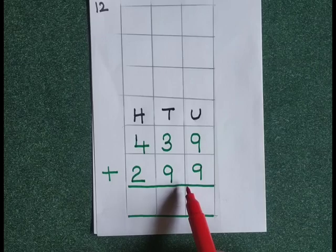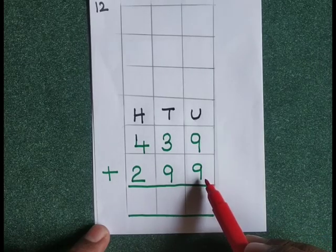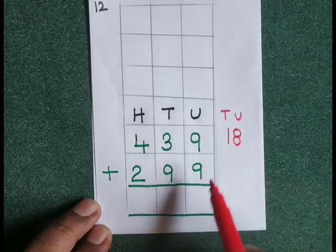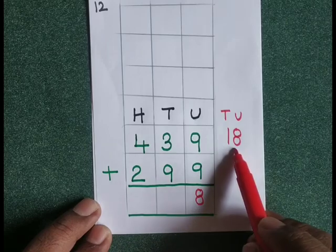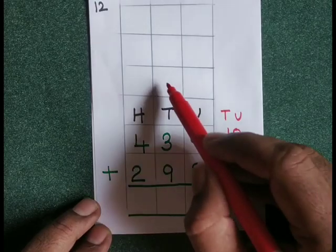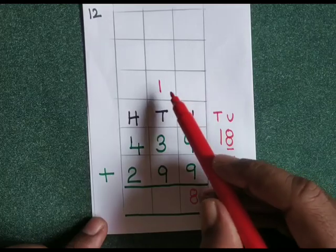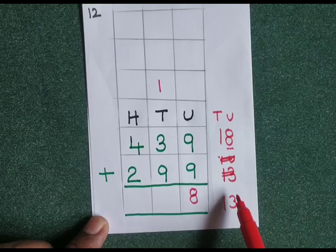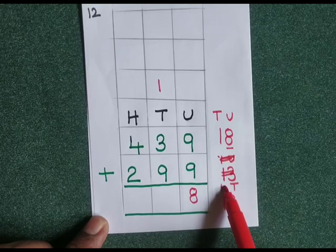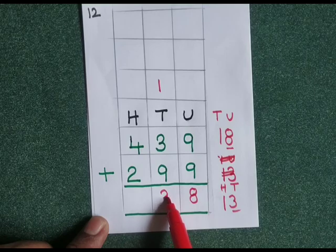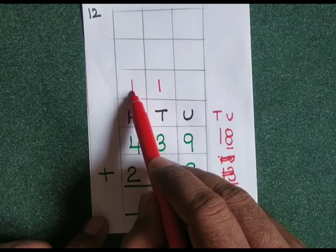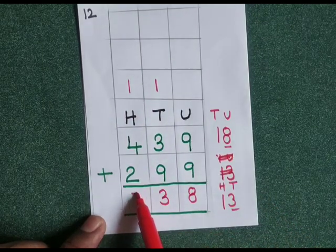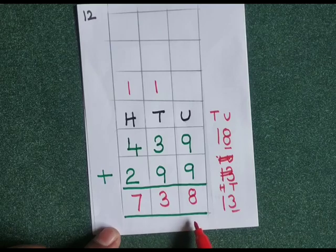436 plus 299 plus 29. 9 plus 9 is equal to 18. Write 8 at the units place, carry 1 to the tens place. 1 plus 3 is 4, 4 plus 9 is 13. Write 3 at the tens place, carry 1. 1 plus 4 is 5, 5 plus 2 is 7. The answer is 738.